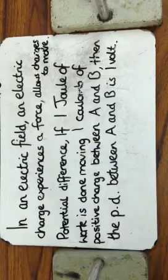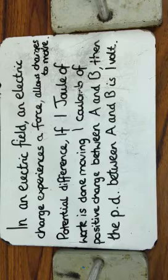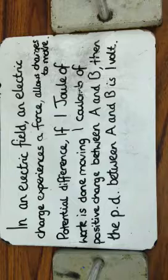In an electric field, an electric charge experiences a force which allows charges to move. Potential difference: if one joule of work is done moving one coulomb of positive charge between A and B, then the potential difference between A and B is one volt.